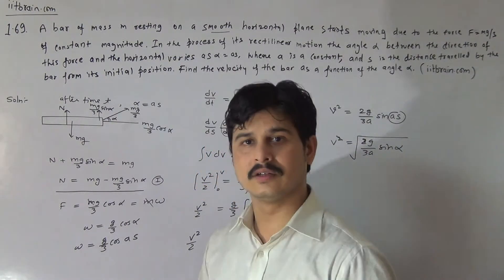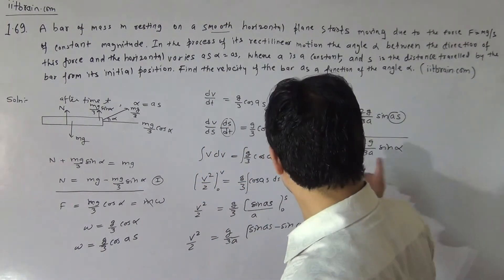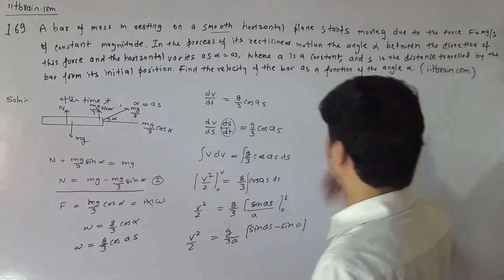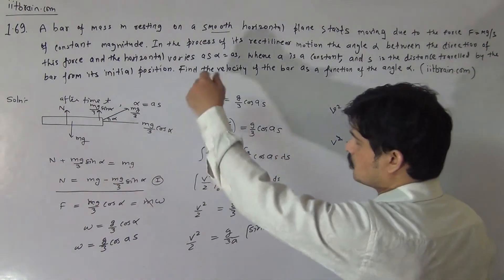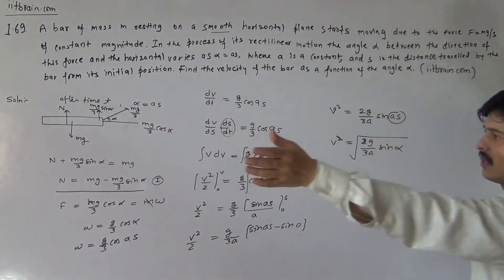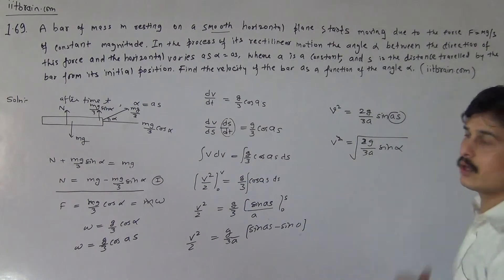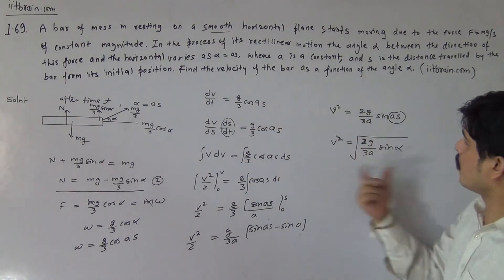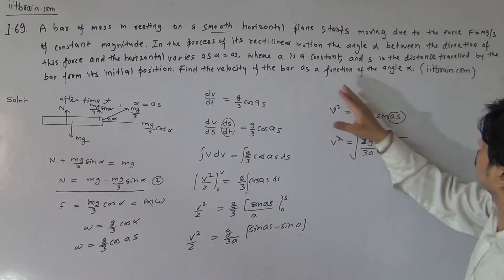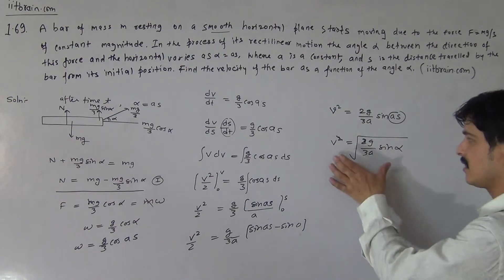This is the relation between velocity and the angle alpha, which is the angle between the direction of force and the horizontal. So this is how we solve the problem to find velocity as a function of the angle of application of force.